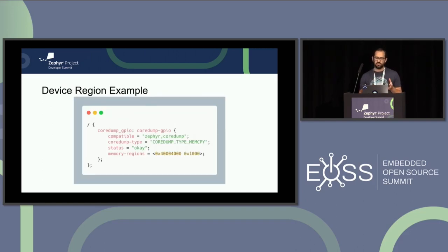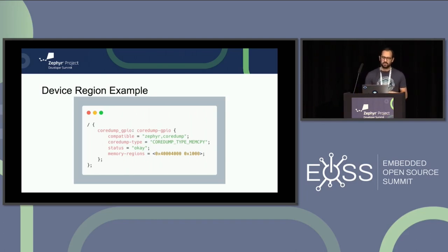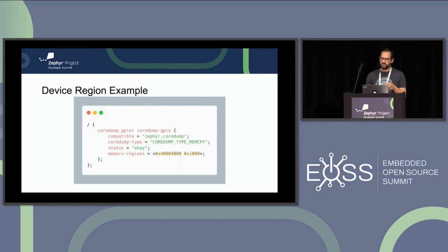The example I'm showing here is a device tree node that I've defined to capture the GPIO block of the QEMU Cortex-M3 target, based on a TI Stellaris chip. I pulled the memory region information from the datasheet and the device tree board file for that target. Two things to note: the core dump type says 'mem copy' because we're capturing a memory-mapped region, so it's safe to perform a copy starting at the first address in the memory regions property and using the length. There's also a different type where you implement a callback, for cases where you can't simply copy RAM.